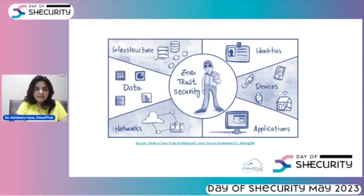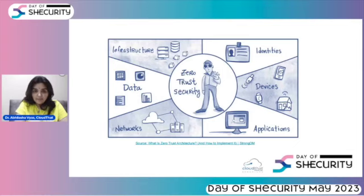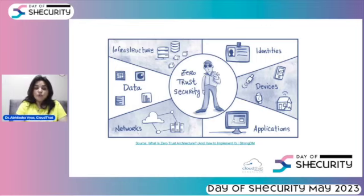Day by day, we see that attacks are happening in the cloud infrastructure. Organizations are looking for approaches through which they can secure their data, their devices, and the identities of those accessing the data. This particular architecture gives us the capability where we are not trusting any signal. Any signal means if you are trying to access any application, every time you have to prove that you are a legitimate identity and have authorization to access the given information.